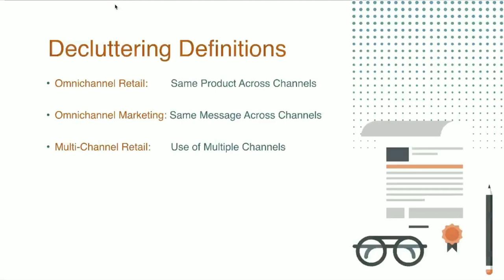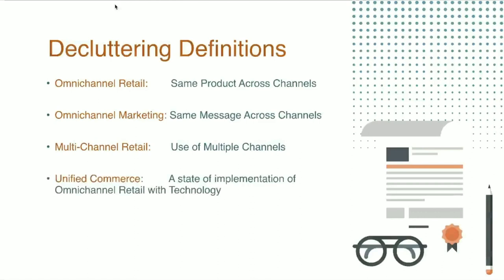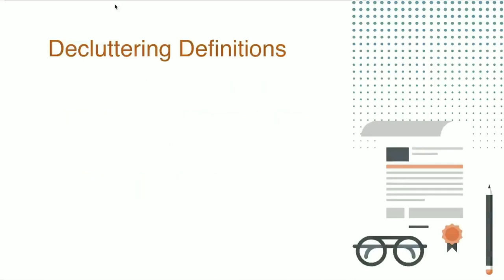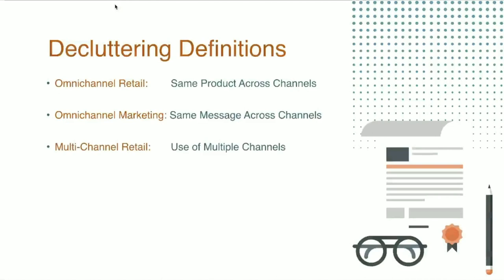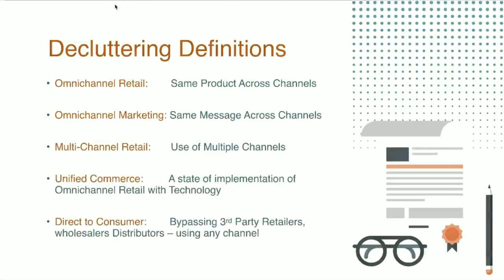Multi-channel retail is essentially the use of multiple channels — it's not too different from omni-channel retail, just a part of it. Unified commerce is a state of technology implementation where you're unifying all your channels of sale into a single platform. Direct-to-consumer is where you bypass third-party retailers and distributors — consumers buy directly from your brick-and-mortar store, website, or marketplaces like Amazon and eBay, where you simply pay Amazon a commission for hosting your products.